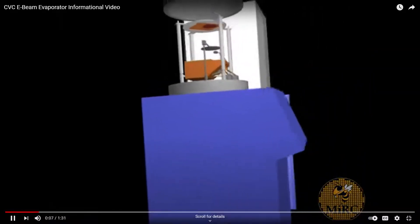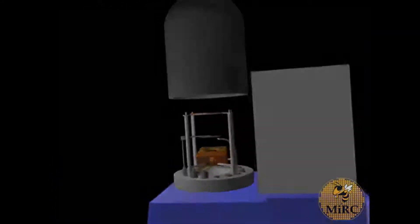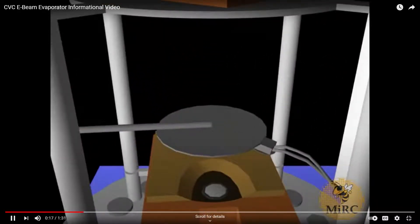An electron beam evaporator, a type of physical vapor deposition tool, is used to coat one side of a sample with various metals. Commonly used metals on this machine include aluminum, platinum, gold, chromium, nickel, and copper.